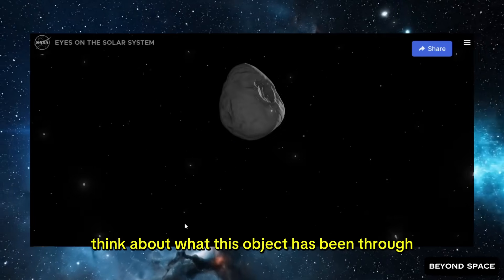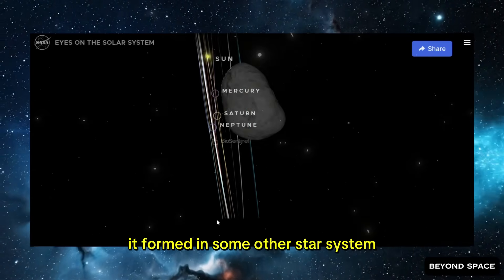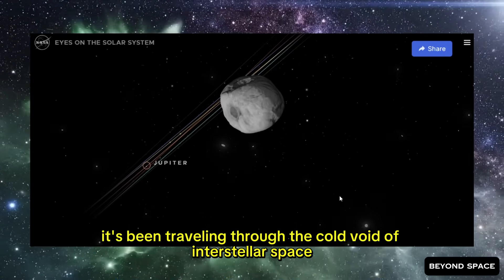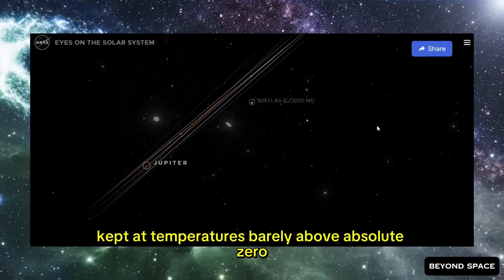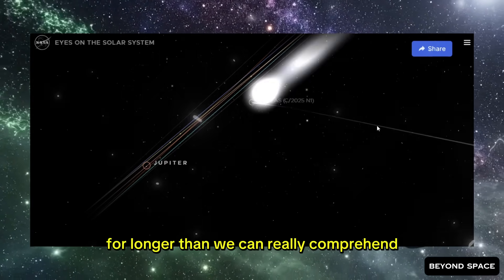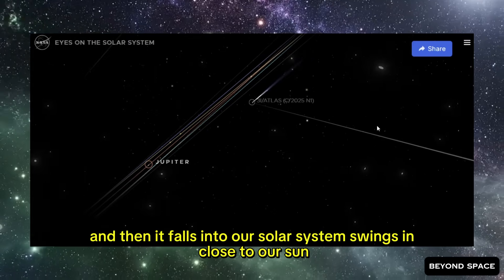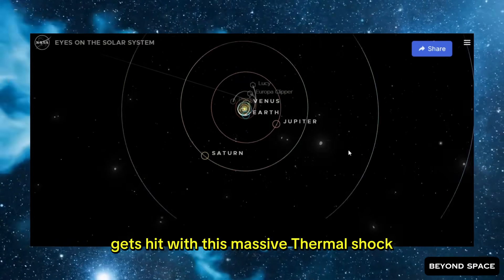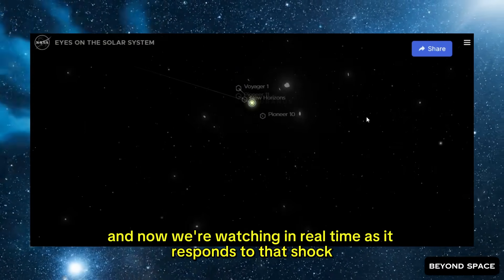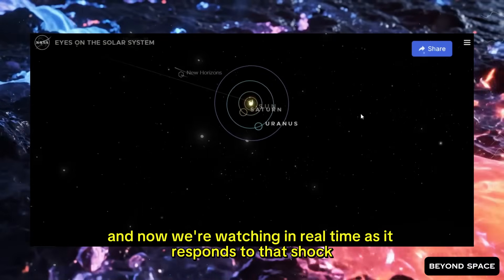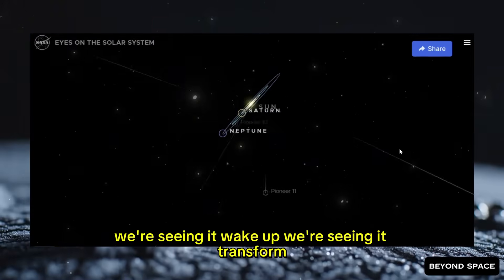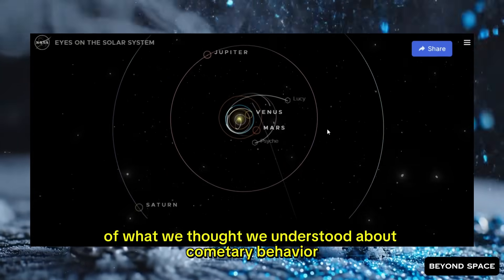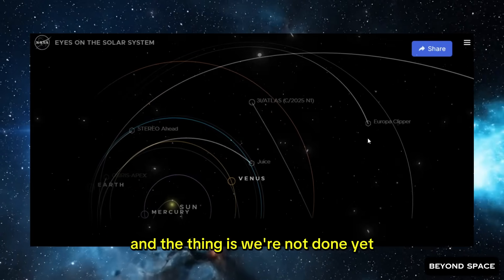Think about what this object has been through. It formed in some other star system, potentially billions of years ago. It's been traveling through the cold void of interstellar space, kept at temperatures barely above absolute zero, for longer than we can really comprehend. And then it falls into our solar system, swings in close to our sun, gets hit with this massive thermal shock, and now we're watching in real time. As it responds to that shock, we're seeing it wake up. We're seeing it transform. We're seeing it do things that challenge our models and push the boundaries of what we thought we understood about cometary behavior. And the thing is, we're not done yet.